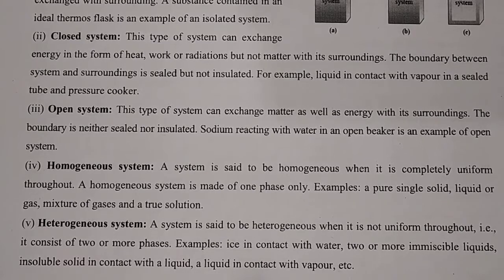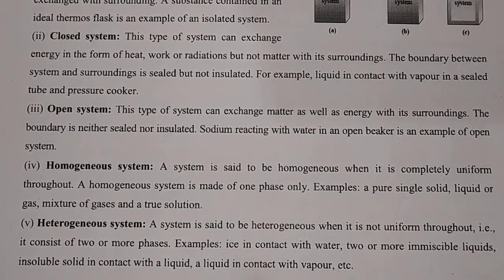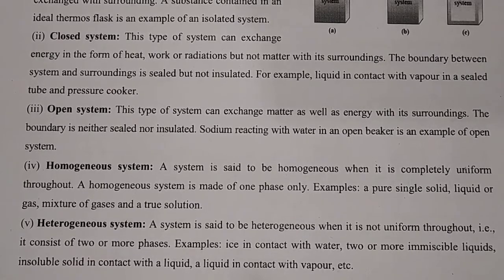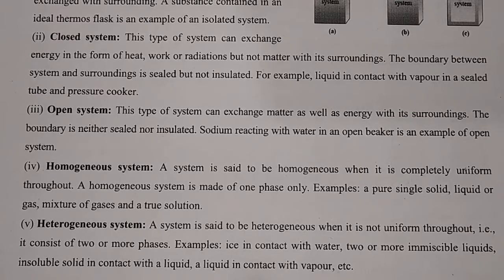Heterogeneous is the opposite — a system is said to be heterogeneous when it is not uniform throughout. It consists of two or more phases. Examples discussed earlier include sand and chalk powder, sand and water. Other examples are ice in contact with water, two or more immiscible liquids, an insoluble solid in contact with a liquid, and a liquid in contact with vapor.